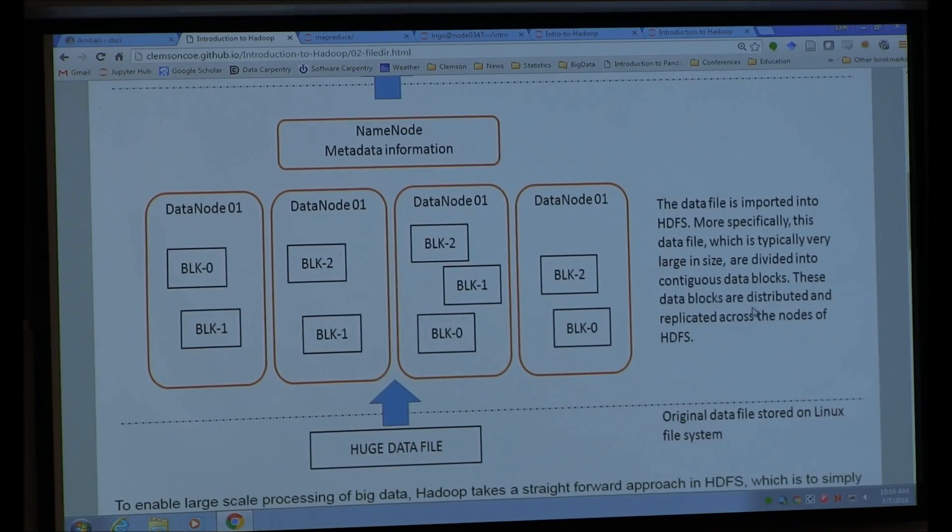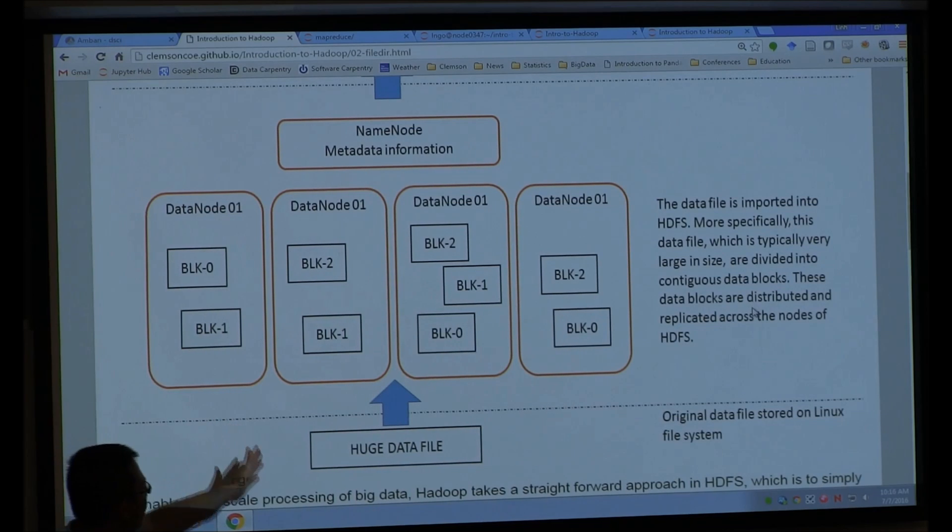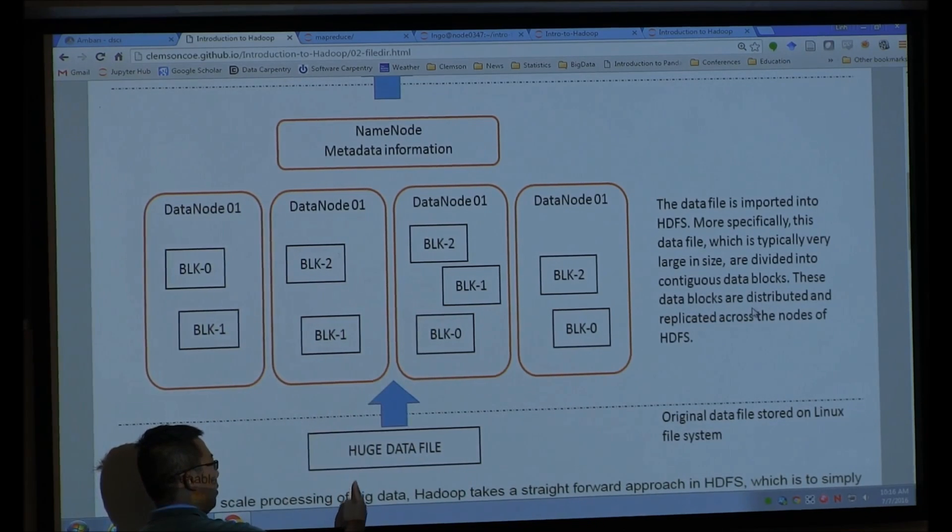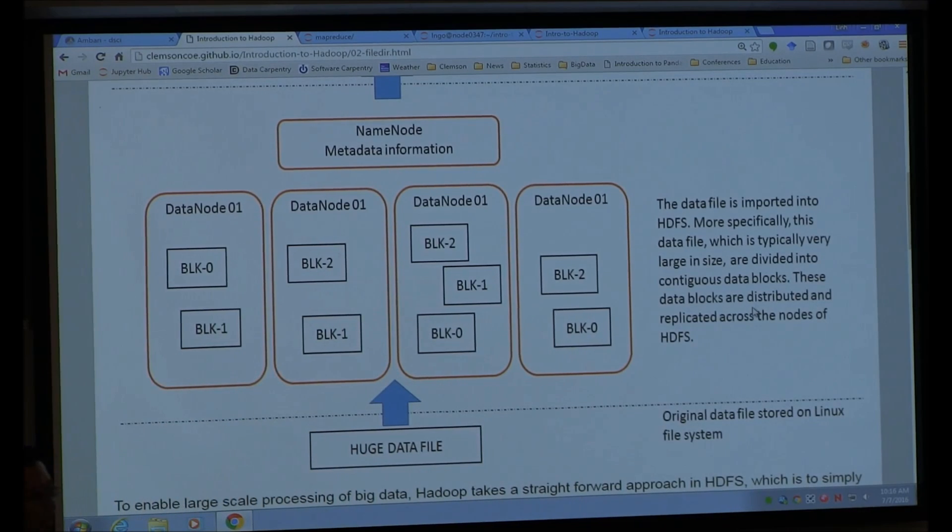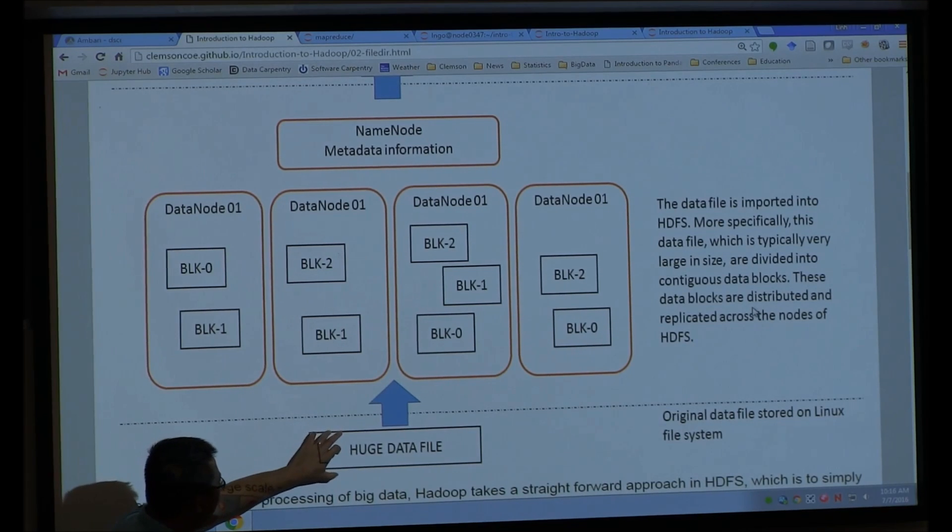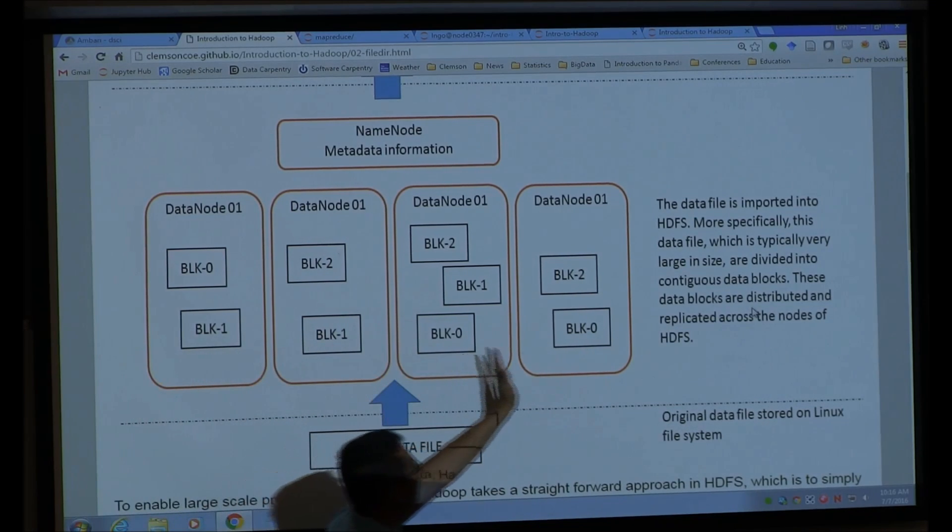Hadoop takes a very straightforward approach in trying to divide a huge data file into small chunks. So it doesn't have anything fancy here. It comes straight up and just chops off this file into contiguous blocks. If you have a text file and you look at the blocks, you can see that the blocks are actually sequence of files connected. If you put them together, you get the original file. So these blocks are split, and then they are replicated, and they are spread across the data nodes.